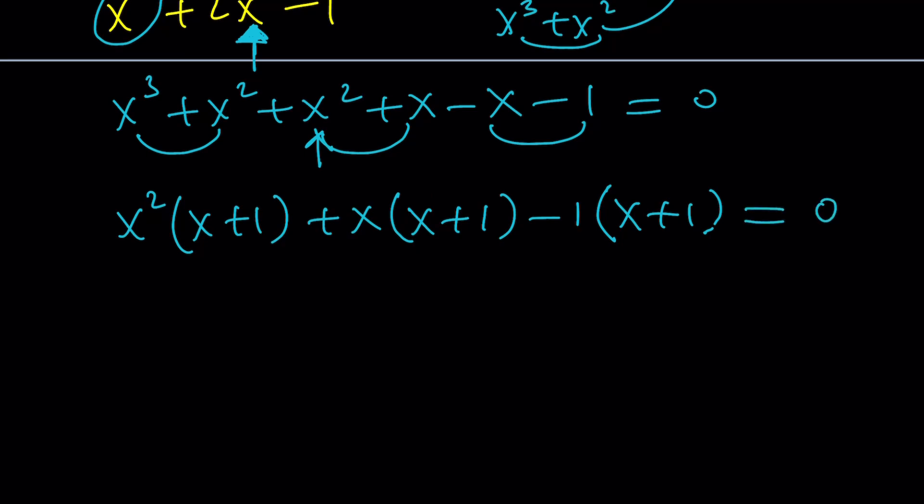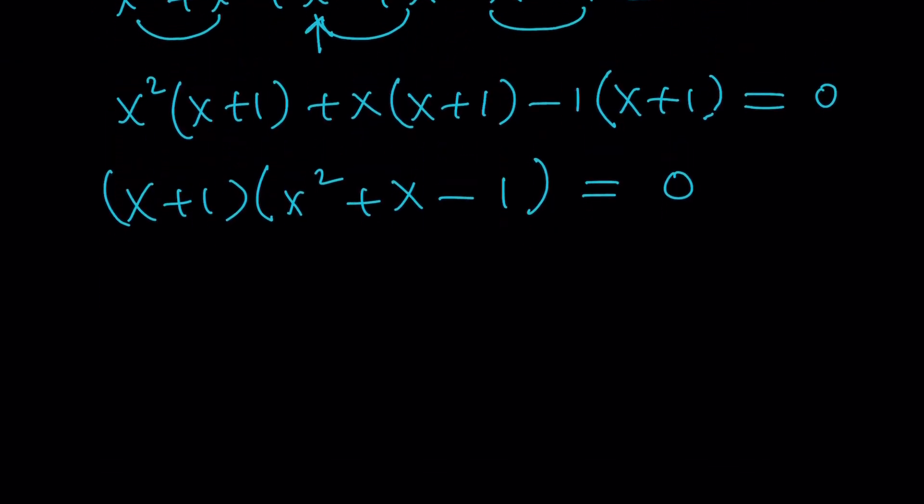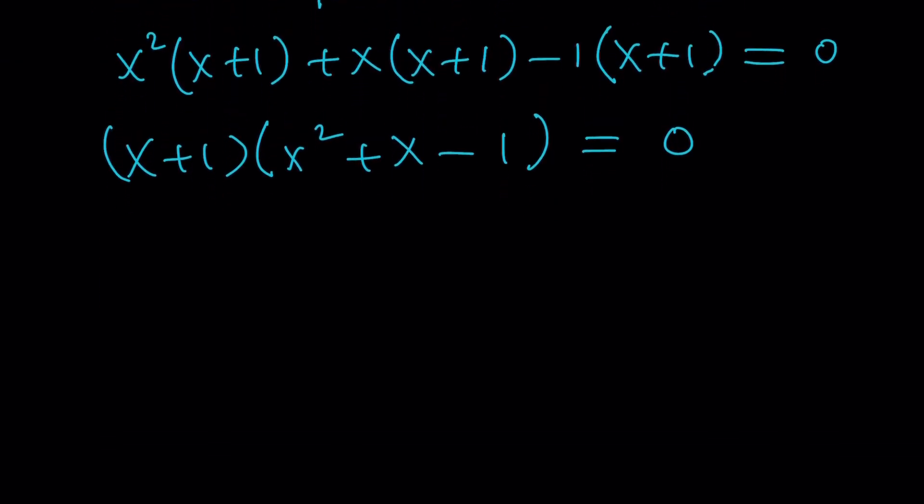Now, x plus 1 is a common factor. We knew that, but we did not know the other factor. The other factor is going to be x squared plus x minus 1 equals 0. Is that some type of equation with a golden flavor? Maybe. The coefficients look promising, but we're going to evaluate that in a little bit. But that's my factoring.